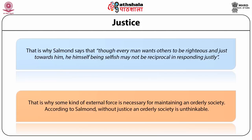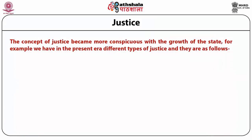According to Salmond, without justice, an orderly society is unthinkable. We have to understand what the categories of justice are before we get into how we enforce justice. The concept of justice essentially became more complicated with the growth of the state. In the present era, we have civil justice, criminal justice, economic or social justice, and distributive justice. Civil justice covers anything that is not criminal. In criminal justice, the sanctions are penal in nature — they will usually lead to the deprivation of an individual's liberty or life, in extreme cases where there is the death penalty.